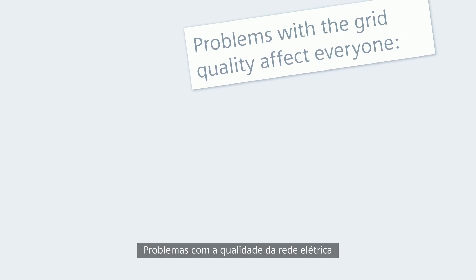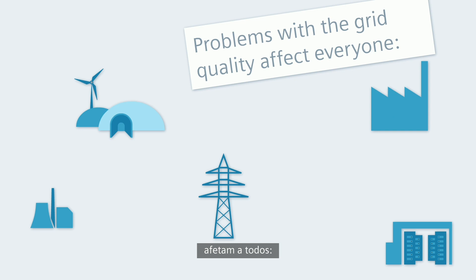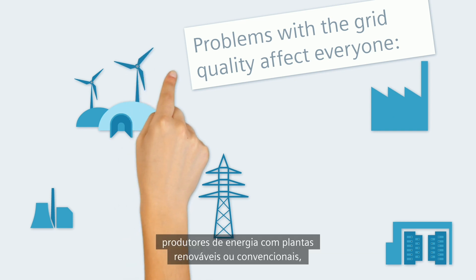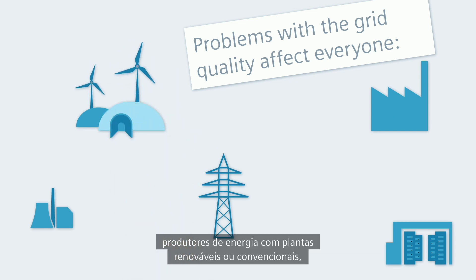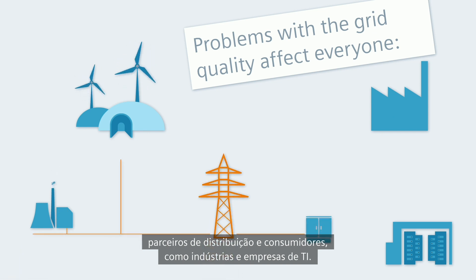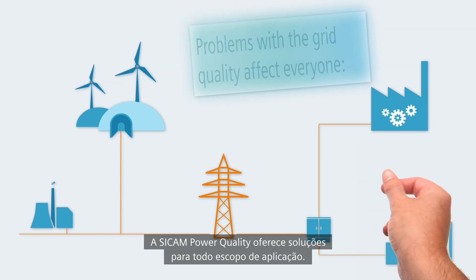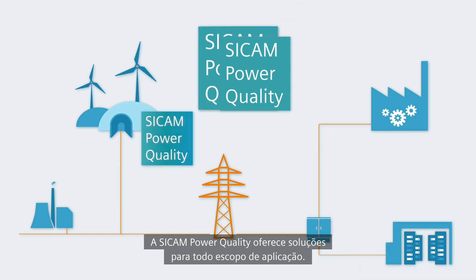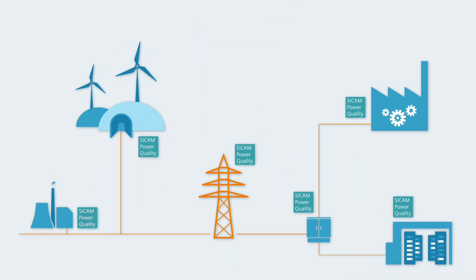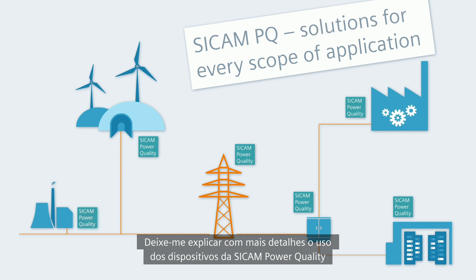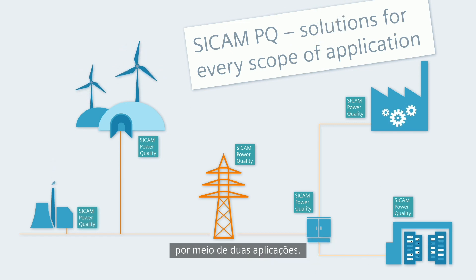Problems with the grid quality affect everyone: energy producers with renewable or conventional power plants and associated distribution grids, as well as energy consumers, for example industry and IT companies. CCAM Power Quality offers solutions for every scope of application. Let's explain in more detail the use of CCAM Power Quality devices using two applications.